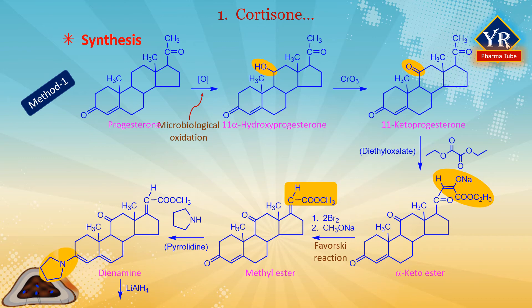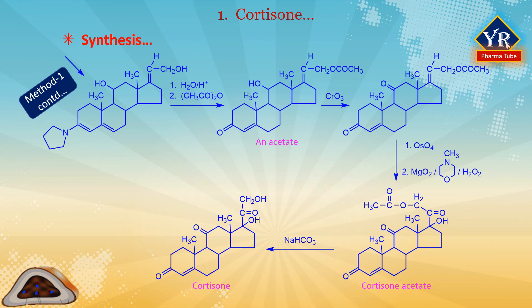Reacting this methyl ester with pyrrolidine gives a dienamine. The dienamine produced undergoes reduction by lithium aluminum hydride, which results in the keto group at C11 being transformed into a hydroxyl group and the carbomethoxy group into a primary alcohol. Acetic hydrolysis of the product and subsequent acetylation gives an acetate, and the hydroxyl group at C11 is oxidized with chromium oxide to a ketone. This undergoes reaction with osmium tetroxide and the resulting osmate is oxidized by magnesium oxide in N-methylmorpholine giving cortisone acetate. Hydrolysis of the acetyl group using sodium bicarbonate leads to the formation of cortisone.